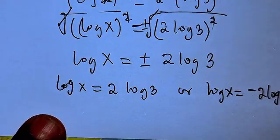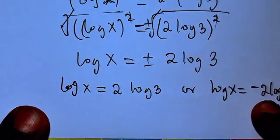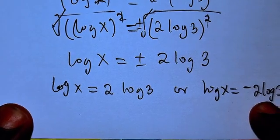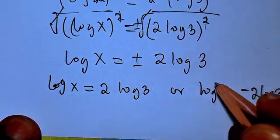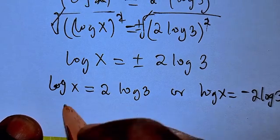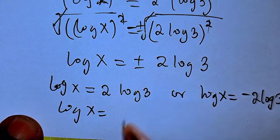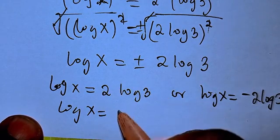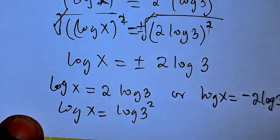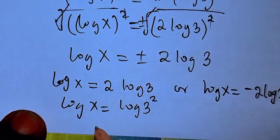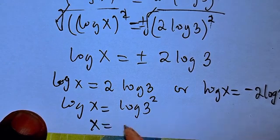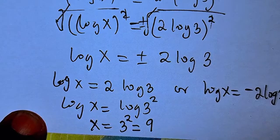We solve further. For the first case, log x equals 2 log 3. We can bring the 2 back as a power, so log x equals log 3 to the power of 2. Therefore x equals 3 squared, which is 9. So x equals 9.